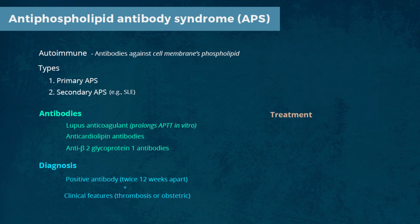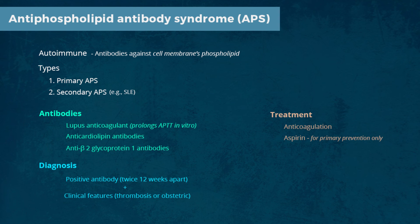The treatment is with anticoagulation, usually lifelong in those with recurrent thrombosis. Aspirin can be used as primary prevention in a pregnant patient with positive antiphospholipid antibodies.